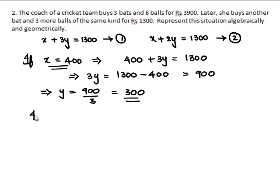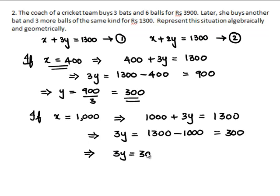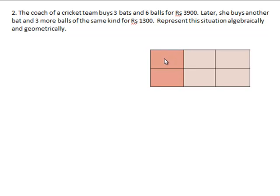Now let us take X = 1000. Then 3Y = 1300 − 1000 = 300, so Y = 100. Let us tabulate these values: for X + 3Y = 1300, when X = 400, Y = 300, and when X = 1000, Y = 100.